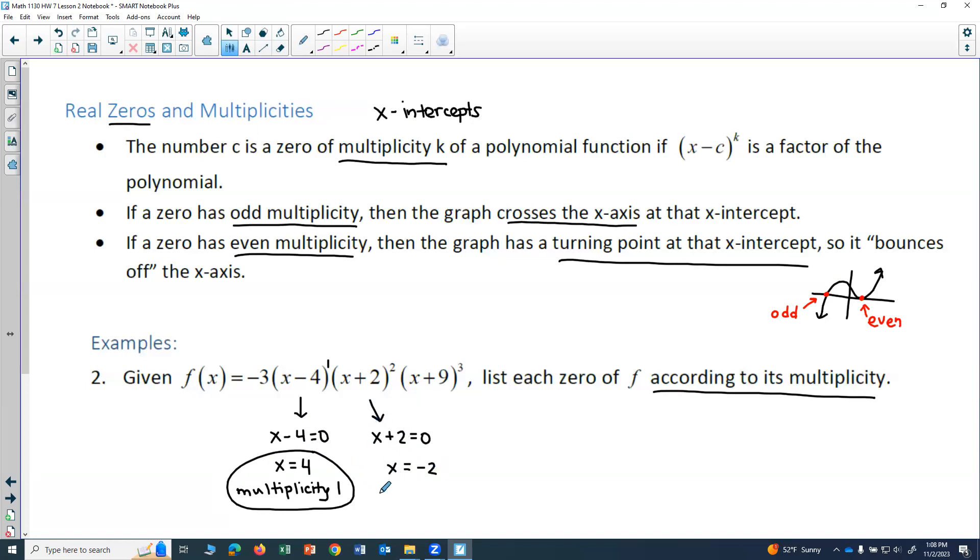To get the multiplicity, I look at the exponent. So that would be multiplicity. And the exponent is 2 right here. So this would be multiplicity 2.